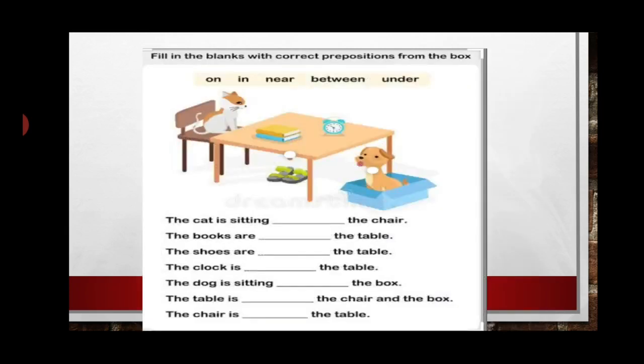The table is between the chair and the armchair. In the next exercise, you can see more pictures. We have to observe them and write the answers — filling the blanks with the correct preposition from the box: on, in, near, between, under. We have to observe the picture and write the word answer.